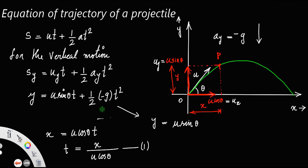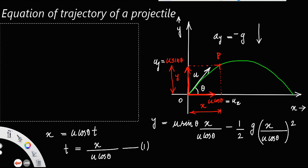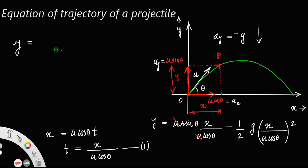Here, you can substitute Equation 1 into this expression. Instead of t, write x / (u cos theta). So: y = u sin theta · (x / u cos theta) - ½g · (x / u cos theta)². The u's cancel, sin theta / cos theta becomes tan theta, and squaring the denominator gives u² cos² theta. Therefore: y = x tan theta - gx² / (2u² cos² theta).